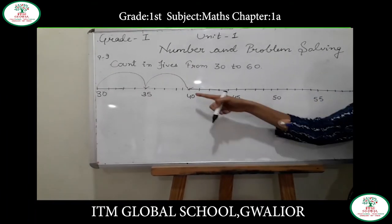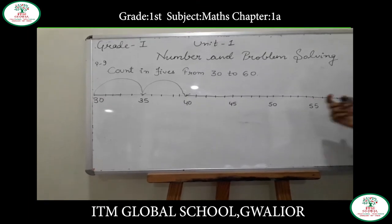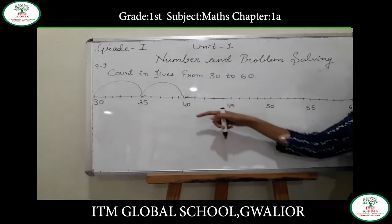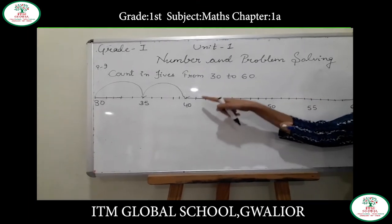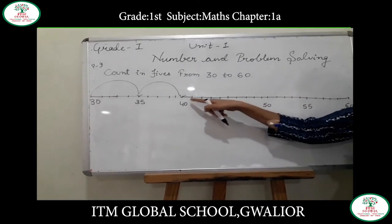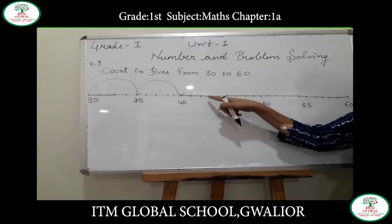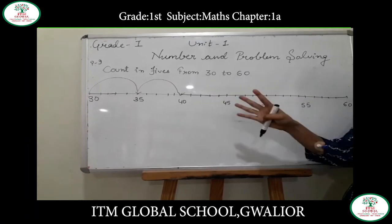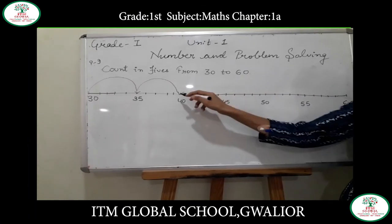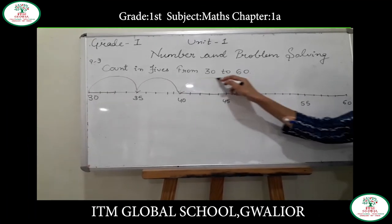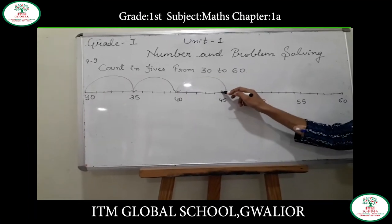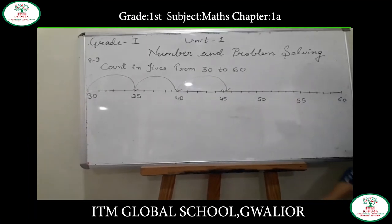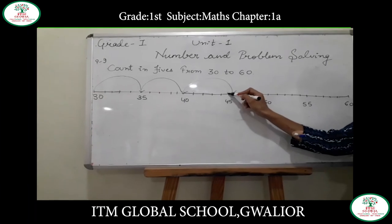After 40, we are counting in fives again, so skip 4 numbers: 41, 42, 43, 44. Done — come to the next, which is 45.